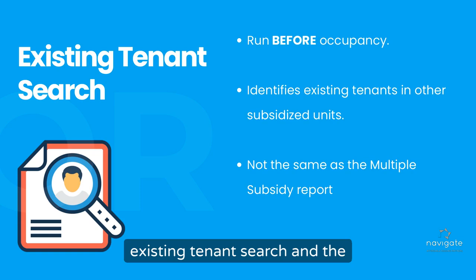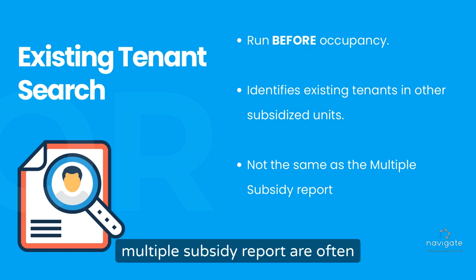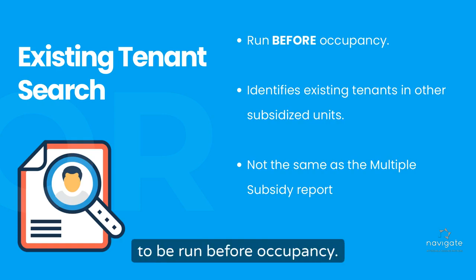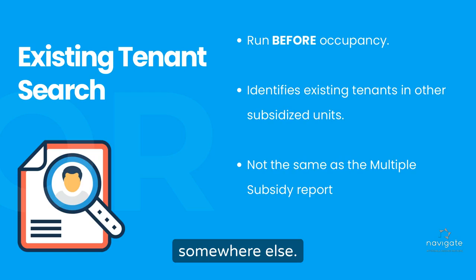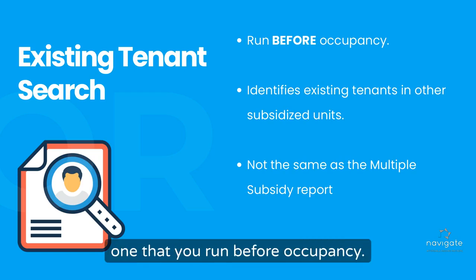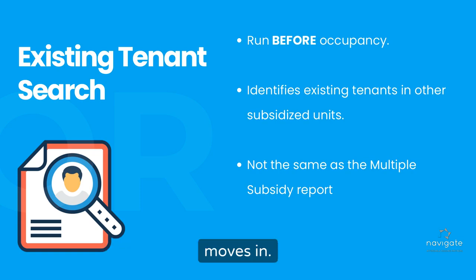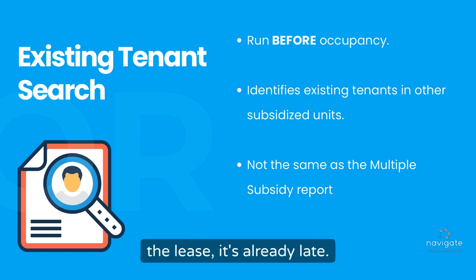We're going to talk about the existing tenant search and the multiple subsidy report — these are often confused. The existing tenant search is going to be run before occupancy. Despite the name, it's not run for your existing tenants; it's run on your applicants to find out if they are existing tenants somewhere else. This has to be run before somebody moves in. If you run it once they've signed the lease, it's already late — so run it before they sign the lease.